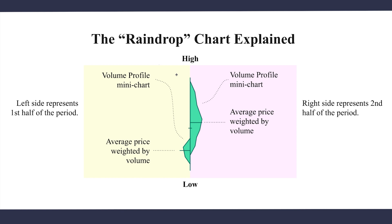A raindrop chart is a volume-based chart. If you're familiar with a price bar, generally with a price bar your left bar is your open and your right bar is your close. For this particular type of chart, the left bar is your volume-weighted average price for the first half of the time period you're looking at. So if we're looking at a daily chart, it's the first half of the day. The second bar is the second half of the day's VWAP. And you can see on top of that is the volume profile.